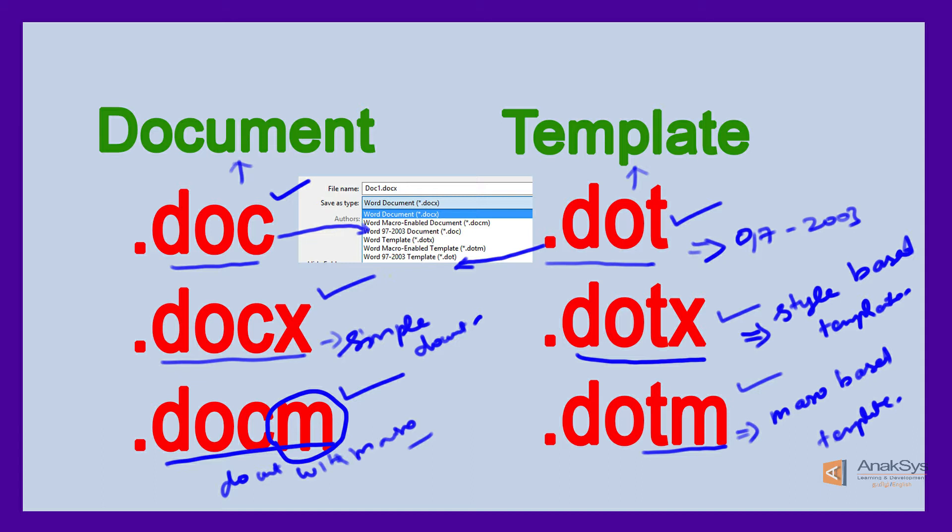Template files, once created, allow us to create multiple new documents based on that style and ribbons. If we include macros, we can reapply or rerun them with other documents. In the case of regular document files, we are unable to create a new document based on an already existing document. This is the only difference.